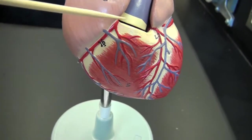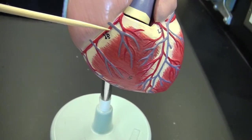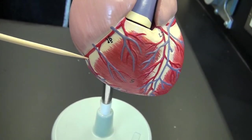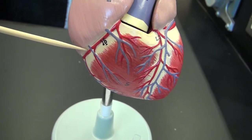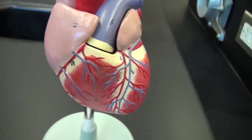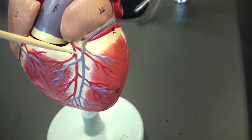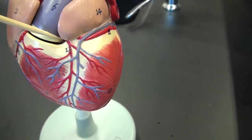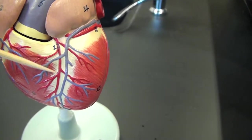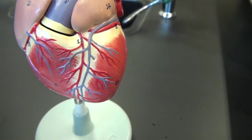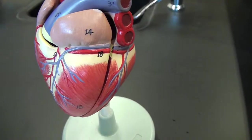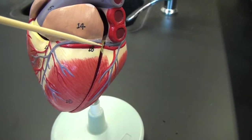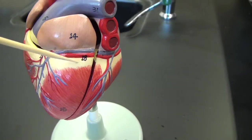This red artery is the right coronary artery. The anterior interventricular artery, it's the red one as well. Circumflex artery, it's also the one in red.